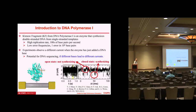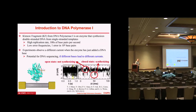The Klenow fragment of polymerase I is an enzyme that synthesizes double-stranded DNA from a single-stranded template. It has a high repetition rate — hundreds of base pairs added per second — and an enormously low error rate. Experimentalists attached it to a nanotube through a linker molecule and observed variations in current: an open state when the enzyme is not synthesizing, and a closed state when it adds a nucleoside, which changes the current they can detect.